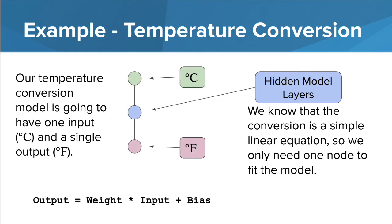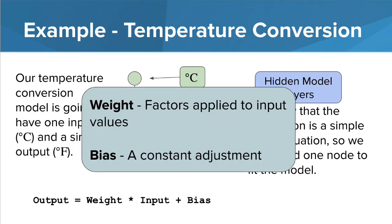Given this model, the equation that is being used to fit the data would look something like this. The input would be multiplied by a weight factor and then a bias would be added as a constant to produce the output. Remember, weights are factors that are applied to our input values and a bias is a constant adjustment.